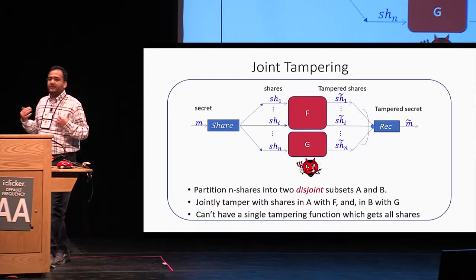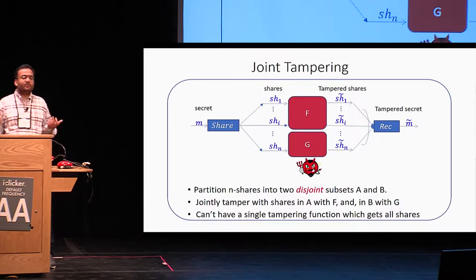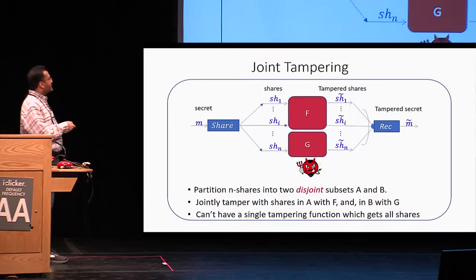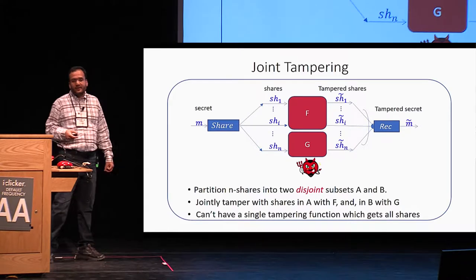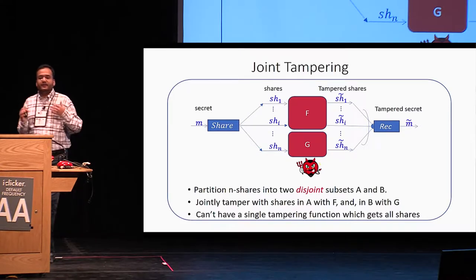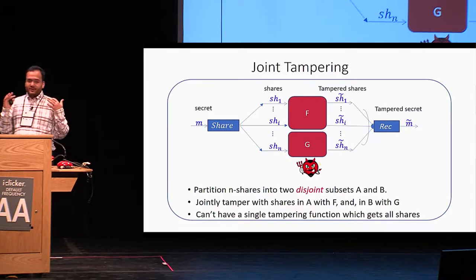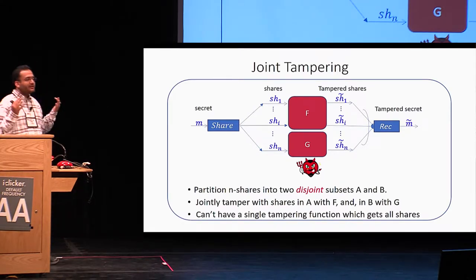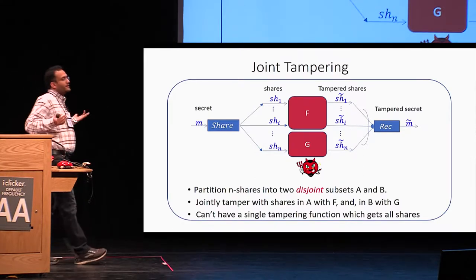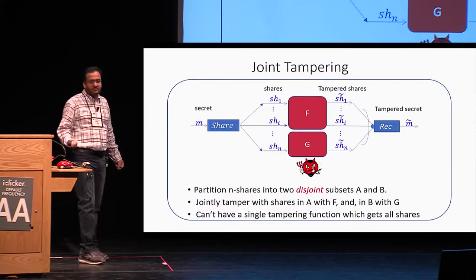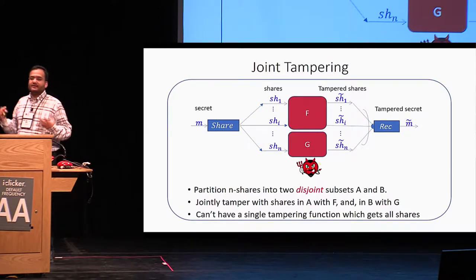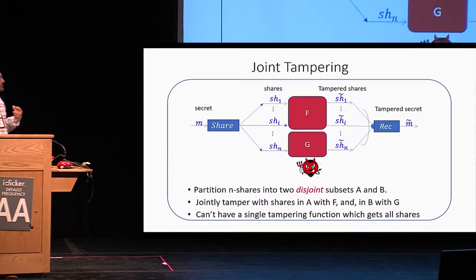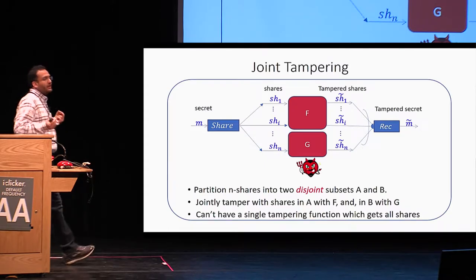Notice that we cannot have a single tampering function which takes all of these shares as input. The reason is that if the tampering function gets all the shares, it can just reconstruct the original message and then replace the original shares with shares of a related message — for example, m plus one. In that case, clearly, non-malleability is something we cannot achieve.